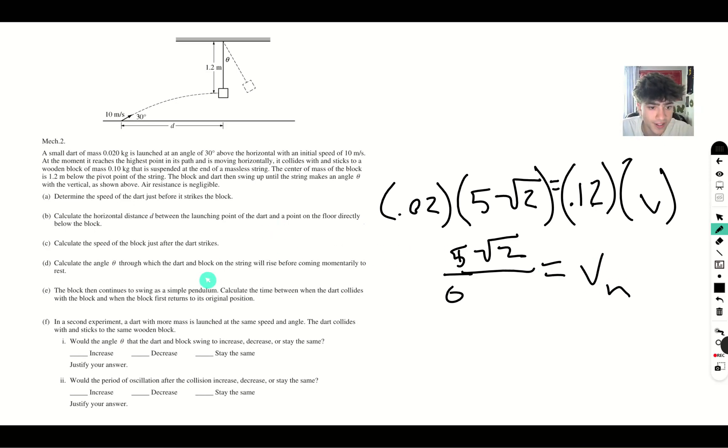It says calculate the angle theta through which the dart and block on the string will rise before coming momentarily to rest. So it wants to know how long before all this kinetic energy is turned into potential energy. From here, we can just use our energy.